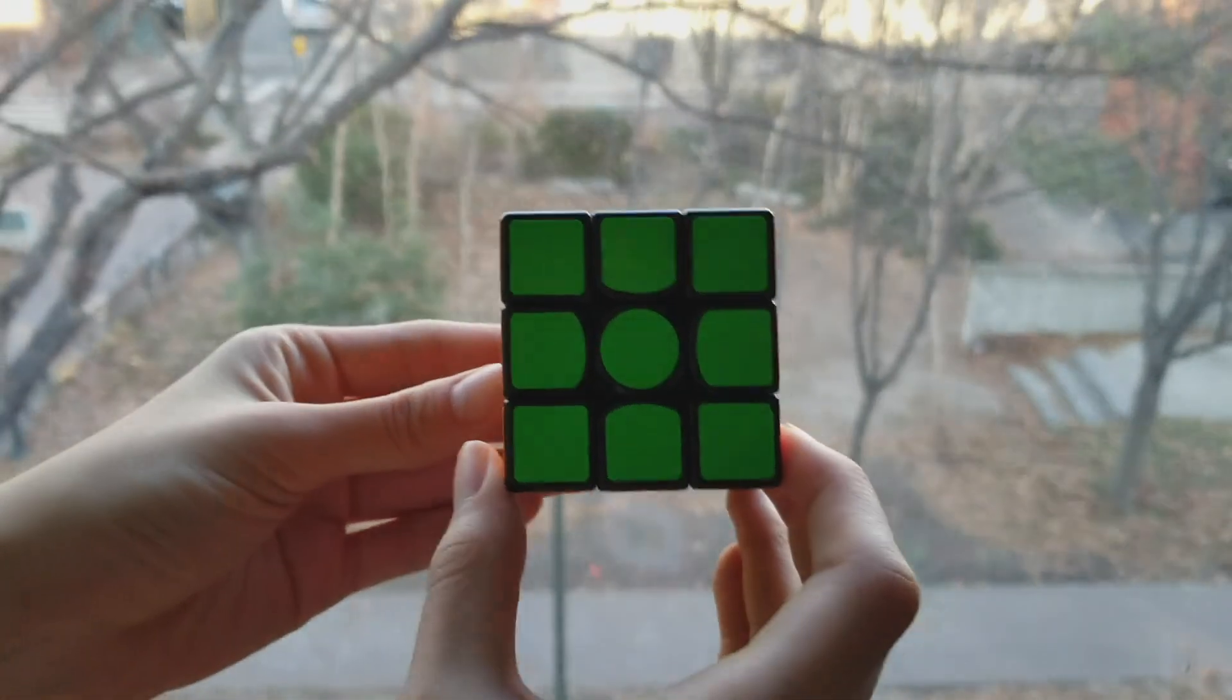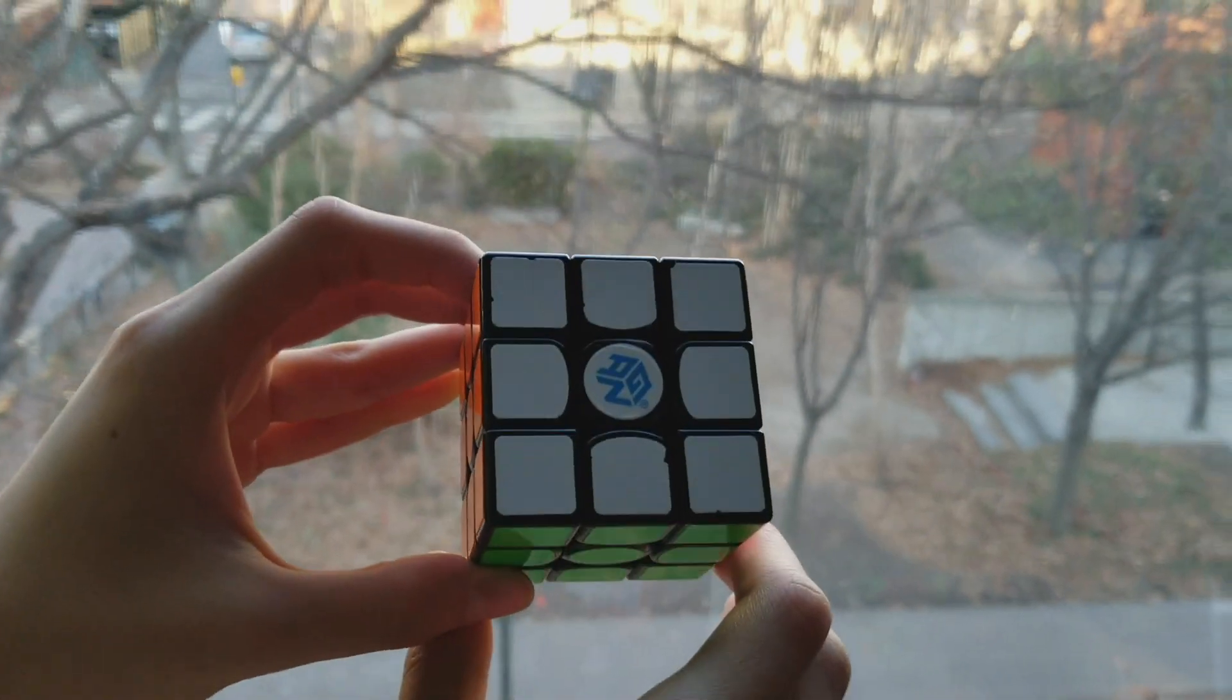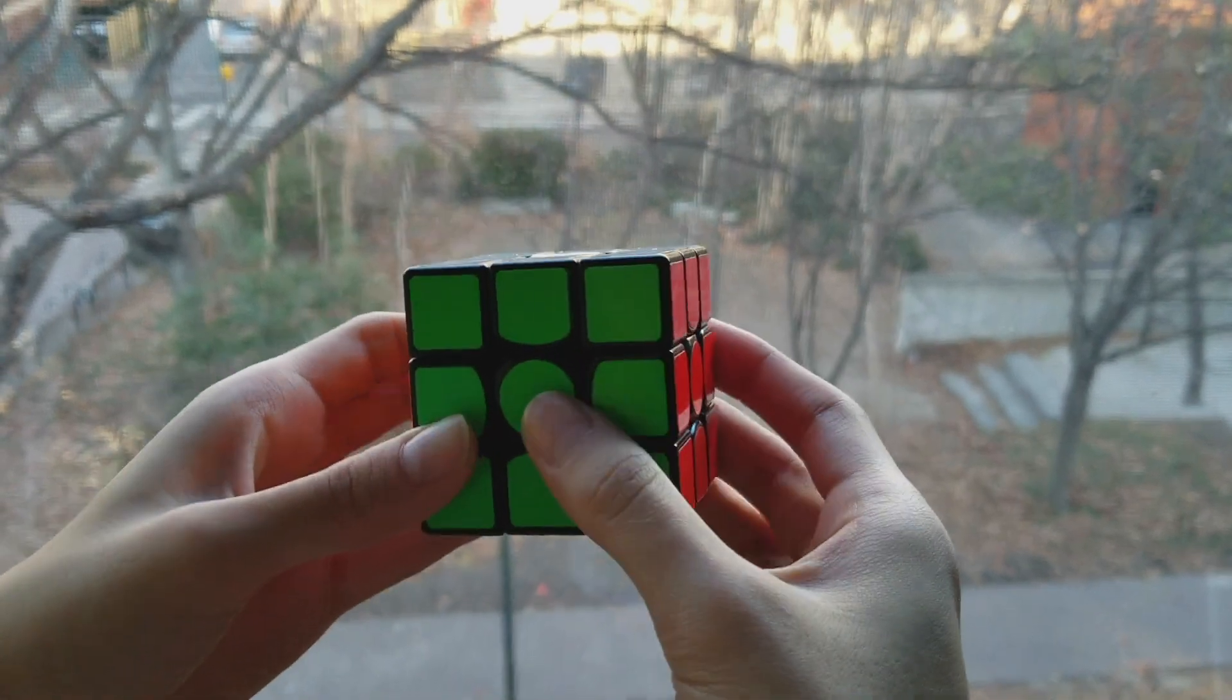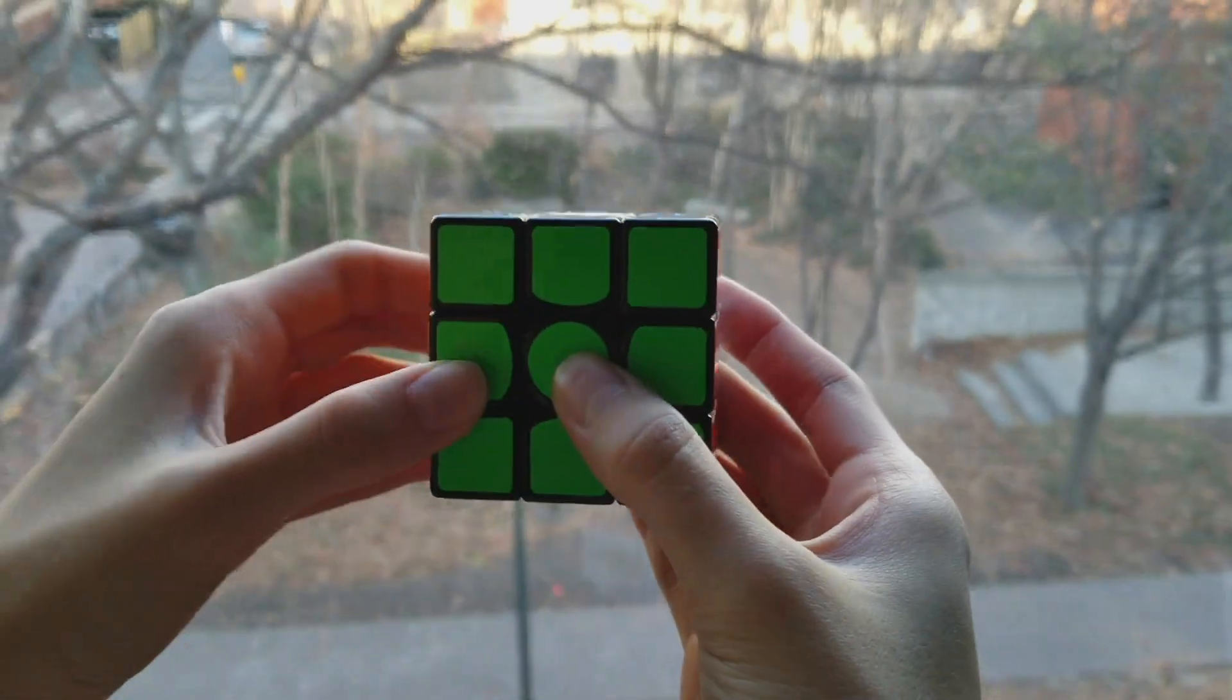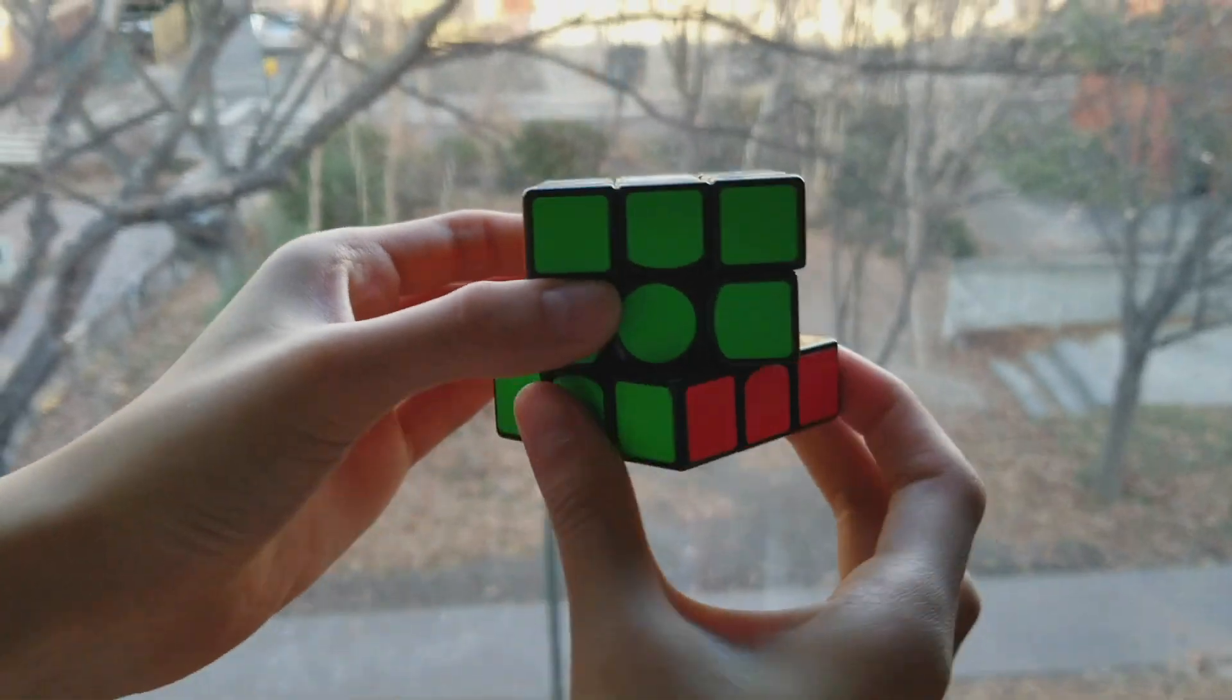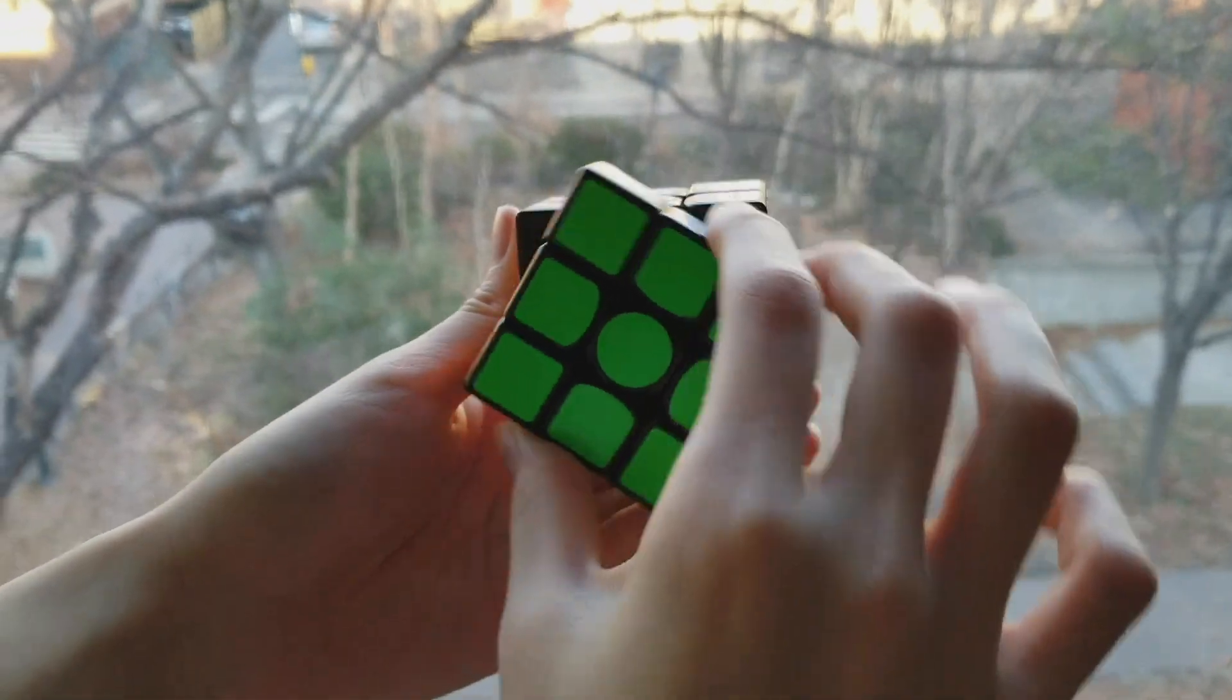Cube with green facing you and white on top. This is the upper layer. This is the left layer. Right layer. Down. Front. And back.